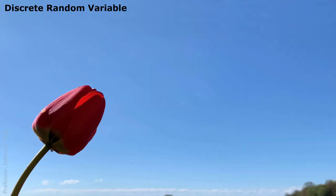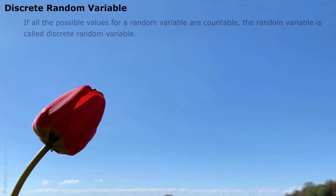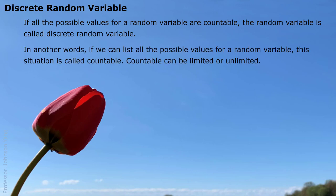Hello everyone. Here we talk about the discrete random variable. If all the possible values for a random variable are countable, the random variable is called a discrete random variable. In other words, if we can list all the possible values for a random variable, this situation is called countable.